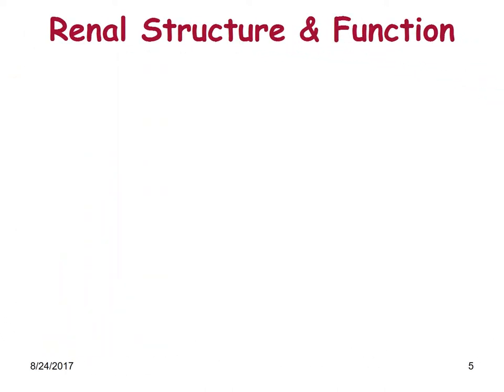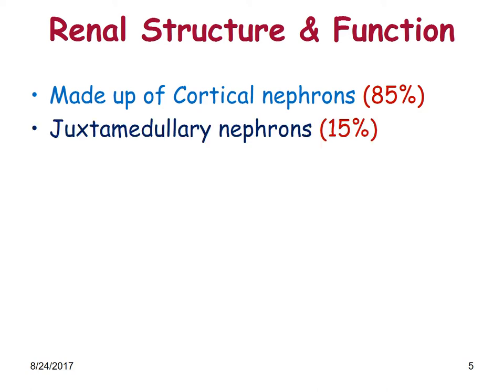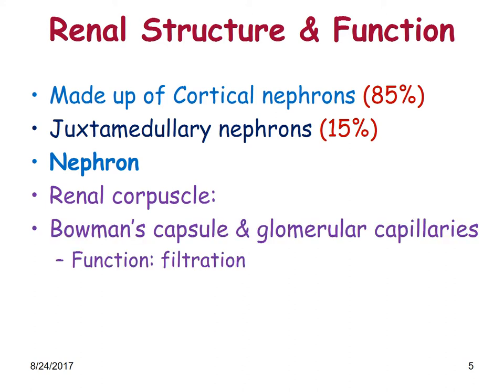Renal structure and function: roughly around 85 percent are cortical nephrons, and about 15 percent are juxtamedullary nephrons, which help in concentrating the urine. The nephron has a renal corpuscle, which is made up of the Bowman's capsule and the glomerular capillaries, and its function is filtration.